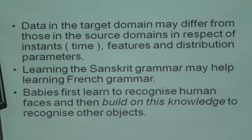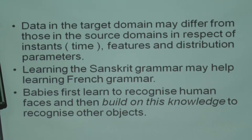Babies first learn to recognize human faces - particularly faces of their parents, close relatives, and caregivers - and then build on this knowledge to recognize other objects, even letters and numbers. Transferring that knowledge is a very difficult, complicated human brain process to extend to other domains, such as acquiring knowledge about other objects including numbers and letters.